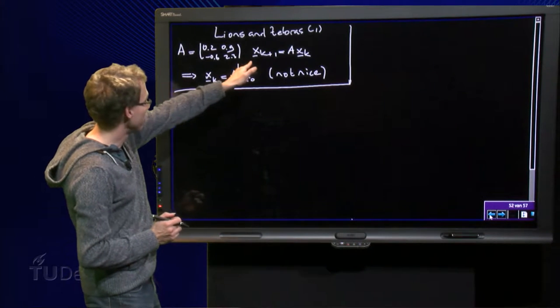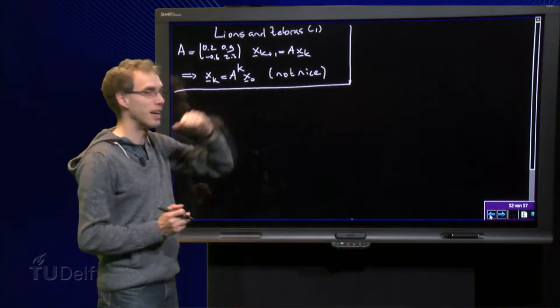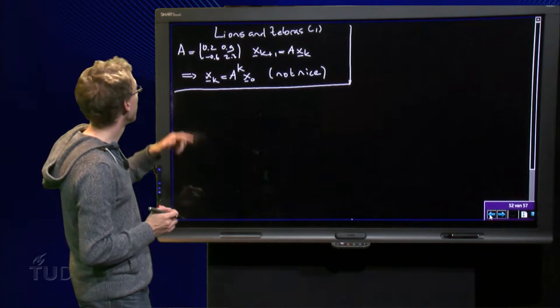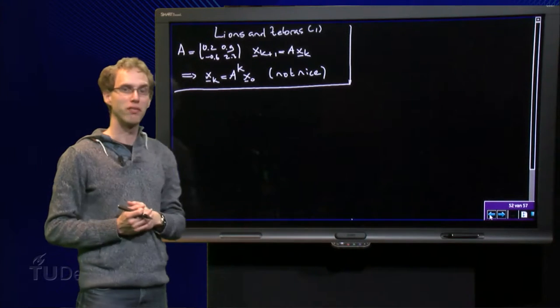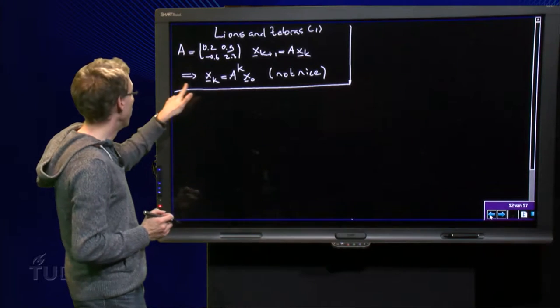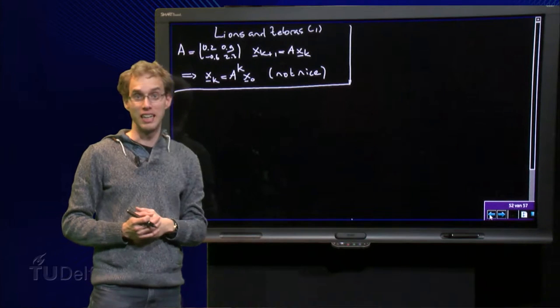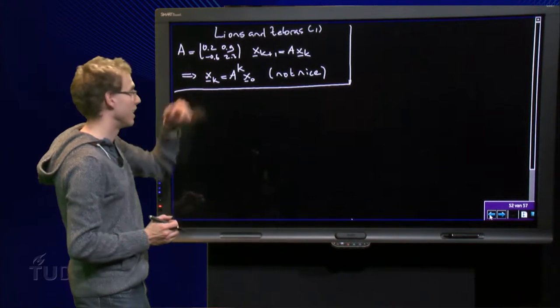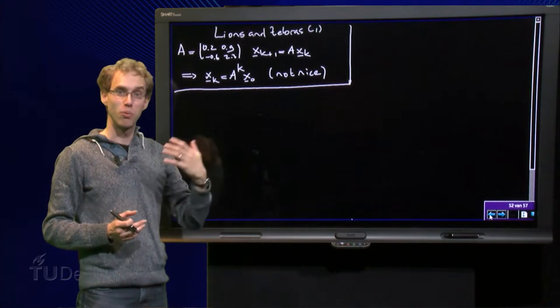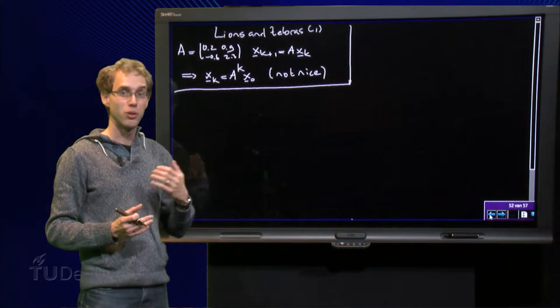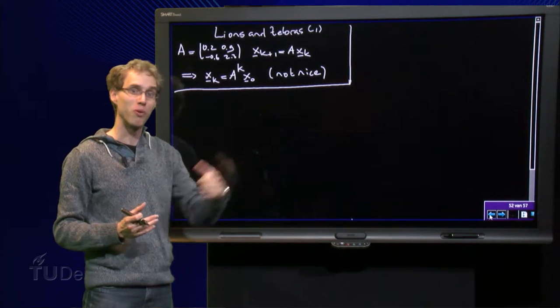We had a dynamical system x_{k+1} = A x_k, where A is this matrix over here. And we know x_k = A^k x_0. However, this is not nice, because the matrix A is awkward. So computing high powers of A is awkward as well, even more awkward of course.